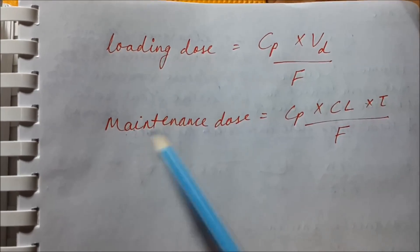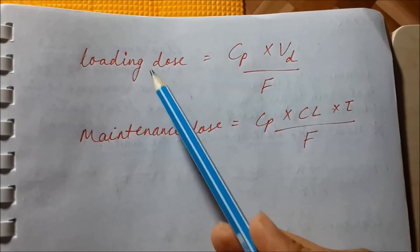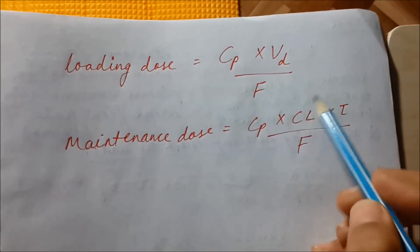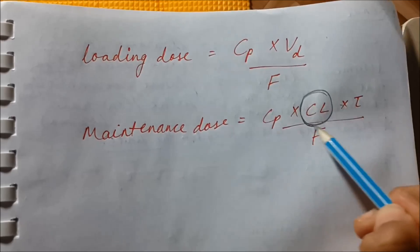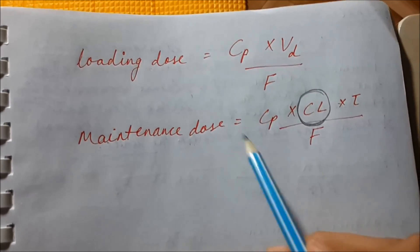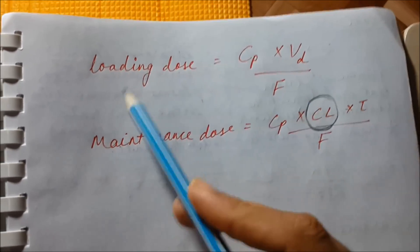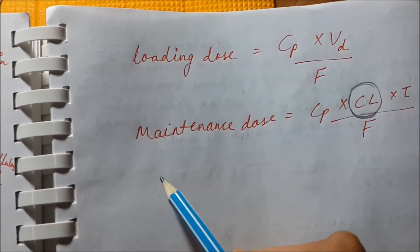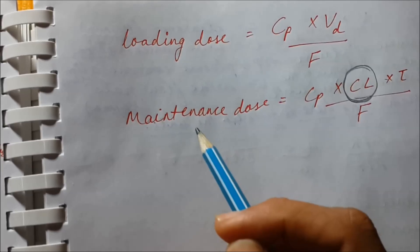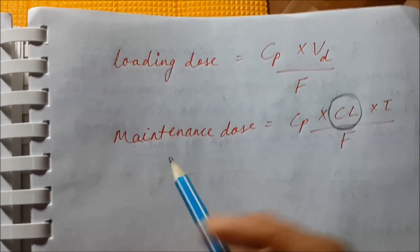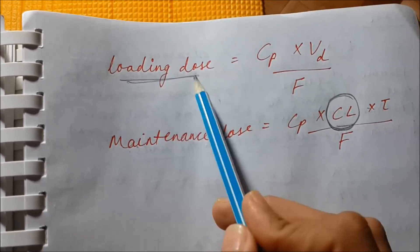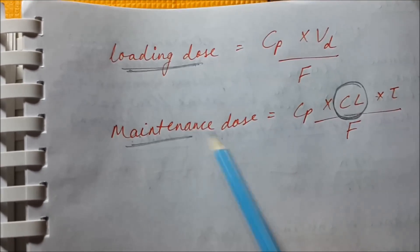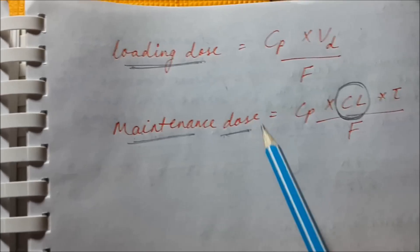Now we'll discuss loading dose and maintenance dose. The single most important difference between them is clearance. Maintenance dose depends upon clearance, while loading dose does not depend upon clearance. This means that if a patient has kidney or liver problems, the loading dose will not change, but we have to adjust the maintenance dose.